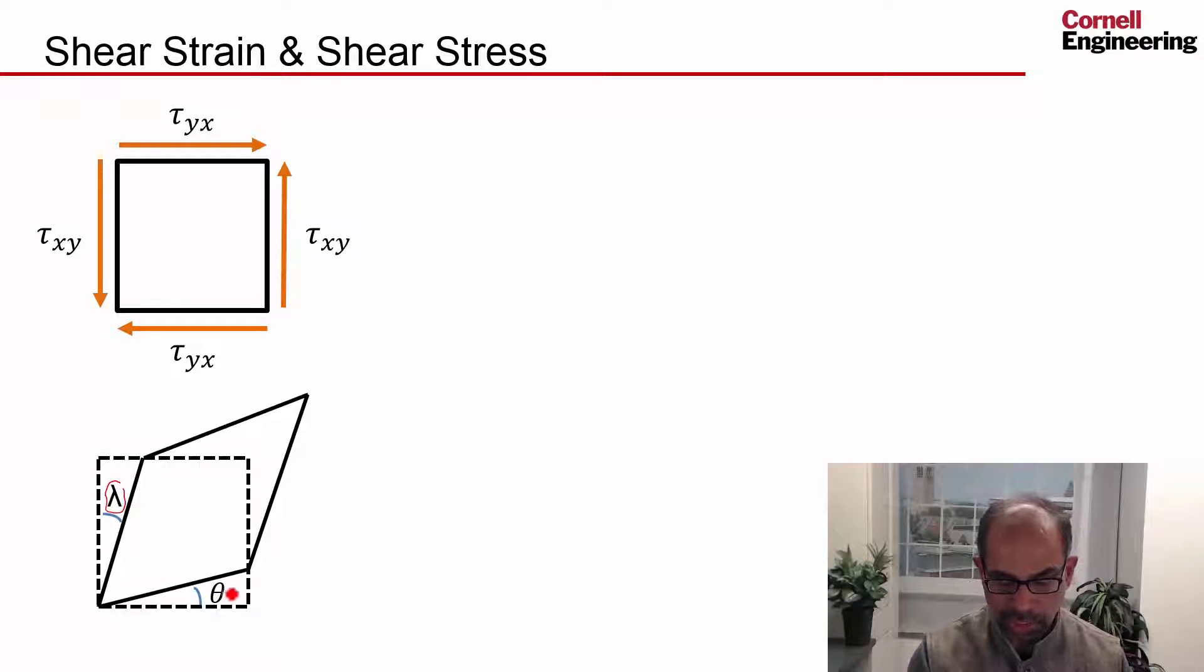Similarly, you will get skewing of this because this corner can move in this direction due to this shear compared to this corner. And you're going to get the skewing, and the measure of that skewing is this angle theta.